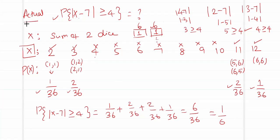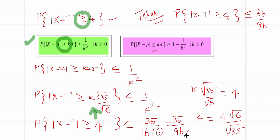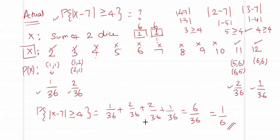Comparing: the exact probability is 1/6 ≈ 0.167, while Chebyshev's gives an upper bound of 35/96 ≈ 0.365. There is a large difference between the two values, but Chebyshev's inequality provides the range within which our answer falls. Hence it helps in estimating the bounds, and the application of Chebyshev's inequality has been verified for the rolling of two dice. Thank you.